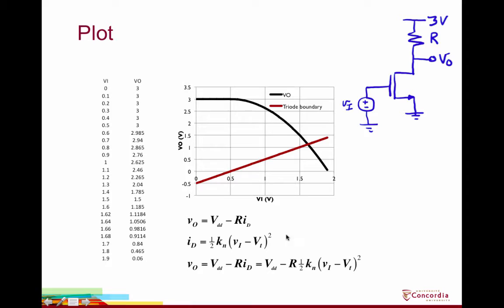Assuming the transistor is in saturation, the first equation is a KVL equation relating V_out to VDD minus the IR drop across the resistor. The drain current, assuming saturation, is (1/2) KN (V_I minus V_T) squared. We're ignoring lambda — channel length modulation — because when a MOSFET is biased to VDD through a resistor, channel length modulation effects are usually quite small and would make hand analysis more complex.